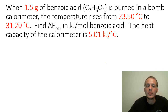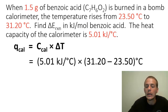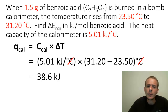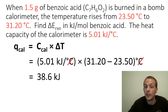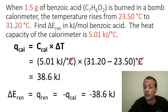To determine the heat absorbed by the calorimeter, we multiply the heat capacity of the calorimeter by the temperature change: 5.01 kJ/°C times (31.20 minus 23.50)°C. The degrees Celsius units cancel, and evaluating this expression gives 38.6 kJ — that is the heat the calorimeter absorbed. The heat released by the chemical reaction is the opposite of that. So delta E at constant volume equals negative Q_calorimeter, which is negative 38.6 kJ.